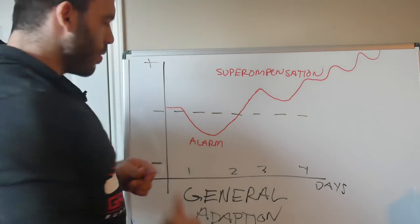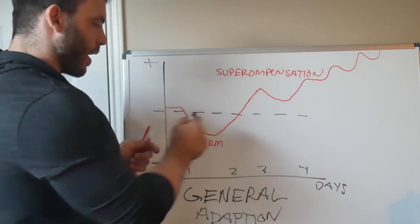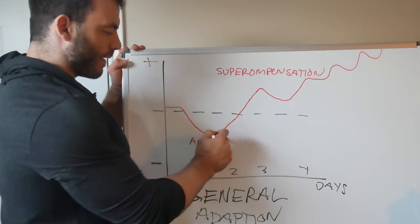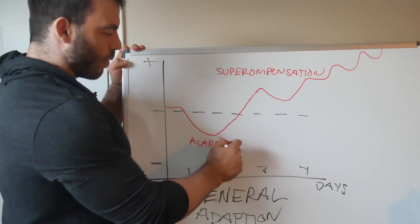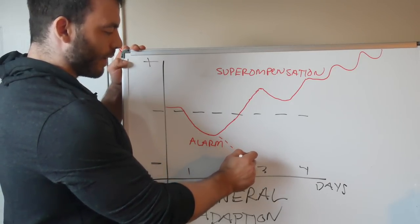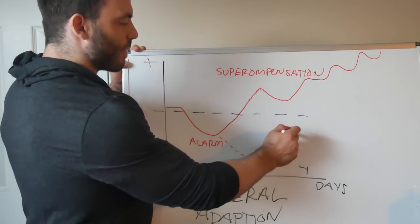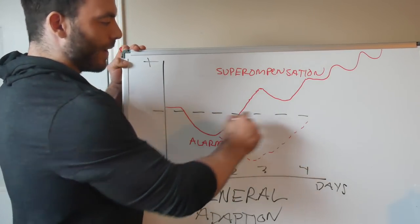The problem arises when I train here instead. So if I'm waiting, I'm still in the alarm phase, and I try and train again, now my performance is way down here. And now it's going to take a lot longer for me to just get back up to baseline. This is all wasted time in here.